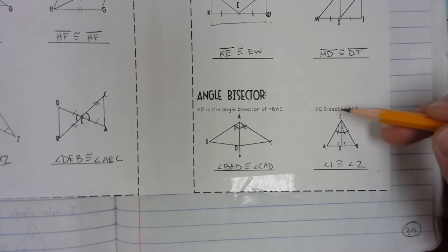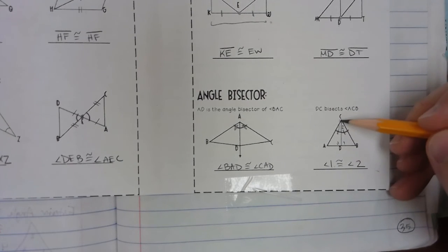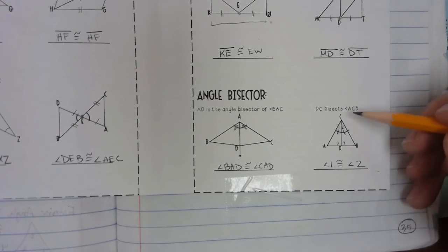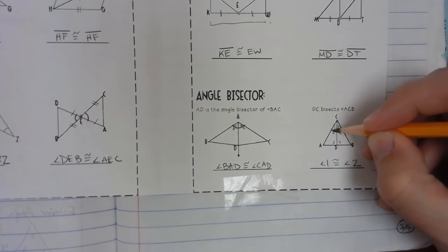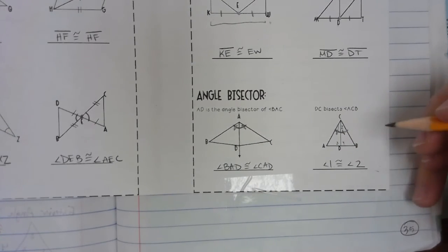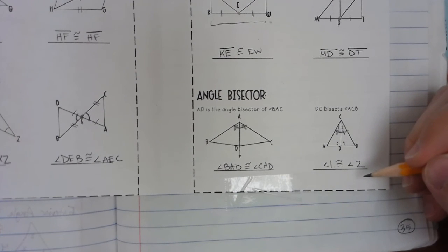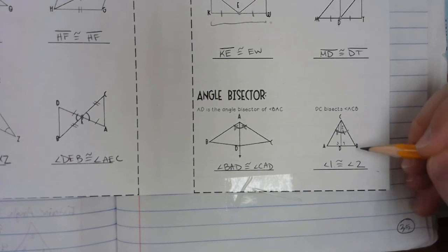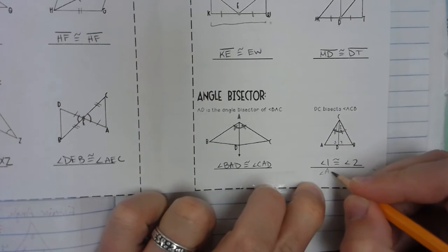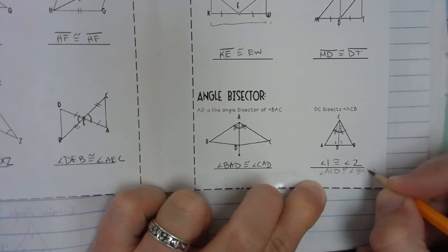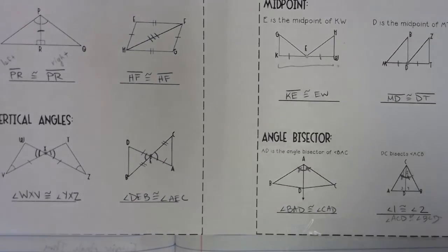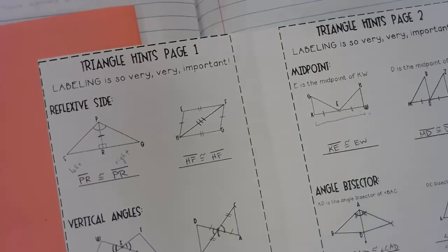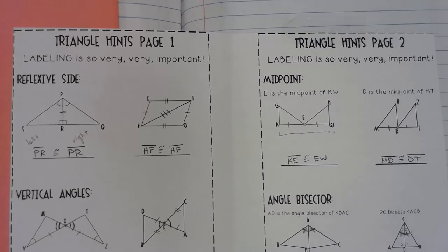Another example: DC bisects angle ACB. DC is the segment in the middle of the triangle, and angle ACB is the top angle. If DC bisects it, we're cutting it in half, so I label the two halves with one tick mark each. We could name these angles ACD and BCD — or simply angle 1 is congruent to angle 2. So, if any triangles have one of these four features — a reflexive side, vertical angles, midpoint, or angle bisector — then we are one step closer to determining if those two triangles are congruent.